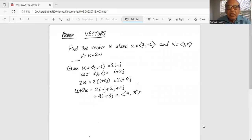Find the vector v where u is a vector with endpoints 2 and minus 1 and w is another vector with endpoints 1 and 2 and the v vector is given as u plus 2w.